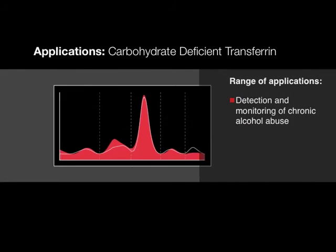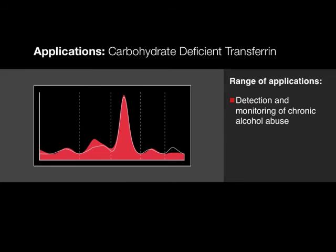The V8 carbohydrate-deficient transferrin assay has been designed for the quantitation of carbohydrate-deficient transferrin isoforms. Traditionally analyzed through HPLC, the V8 provides a high throughput, highly automated alternative.